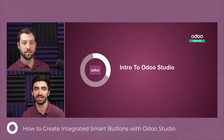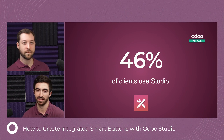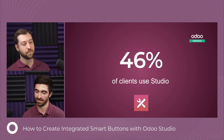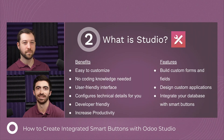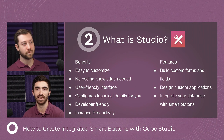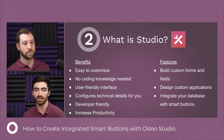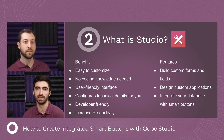We will be presenting the Studio app today. We've discovered that 46% of our clients hosted on our SaaS version use Odoo Studio. Why is that? Because Studio makes customization easy. Regardless of your Python knowledge, you can simply customize applications by dragging and dropping different fields. With Studio you can build custom forms and fields, organize data, and automate your business flows. It is also developer-friendly, so you can access technical details whenever needed.